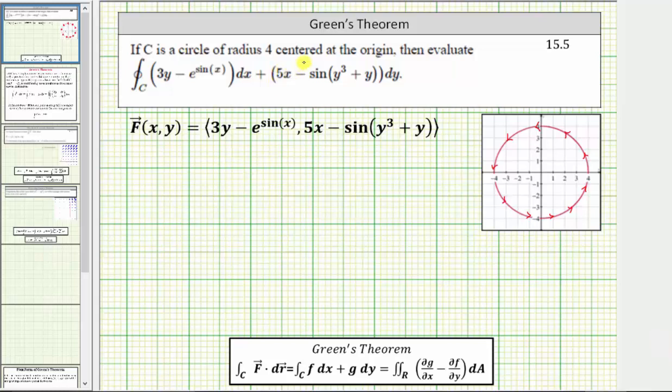If C is a circle with a radius of four centered at the origin, evaluate the given line integral. Notice the integral symbol has this circle in the middle which indicates the curve C satisfies Green's theorem, which will make it much easier to evaluate this line integral.